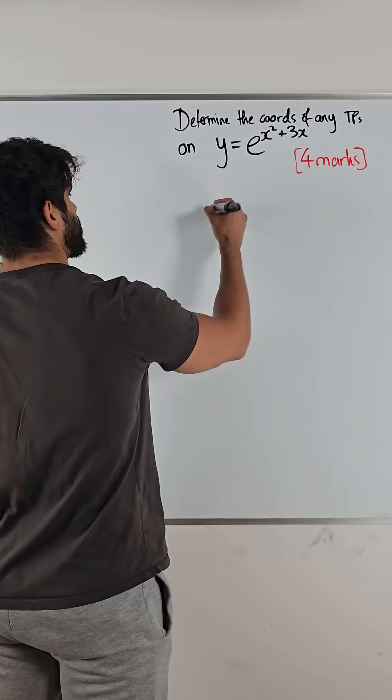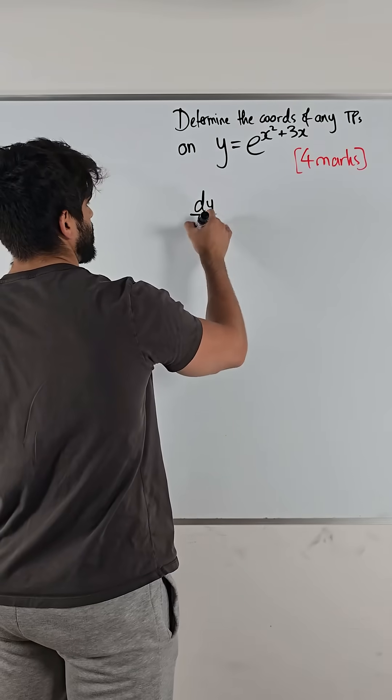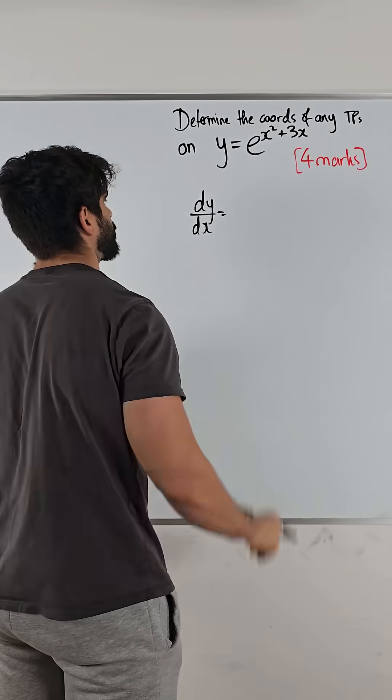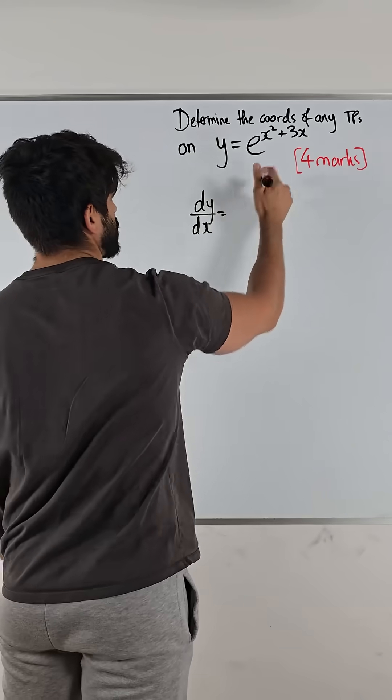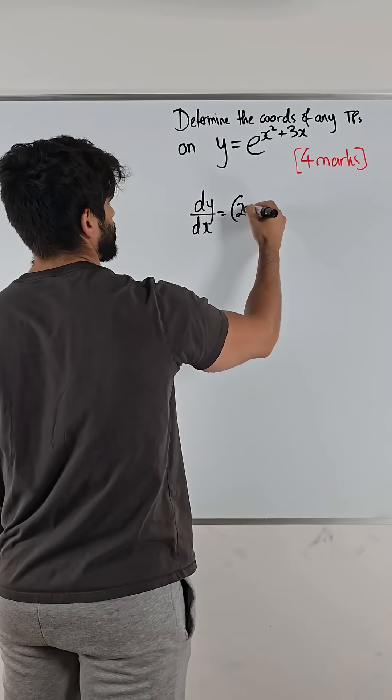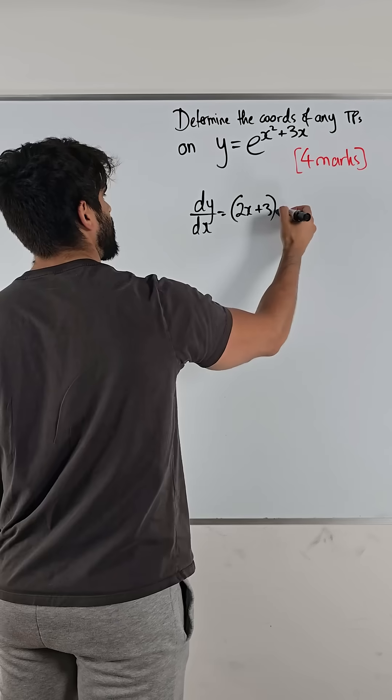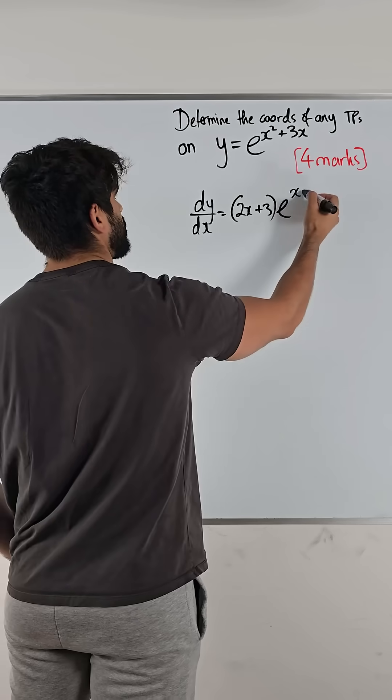So, we're going to have to differentiate it. Gradient meaning differential. How do you differentiate exponentials? E for easy, you just differentiate the power, which x squared becomes 2x, 3x becomes 3. E for easy differentiates the same thing and the power stays the same.